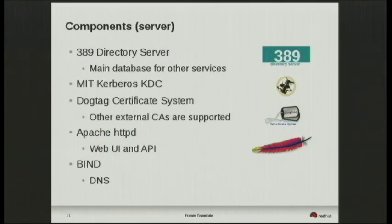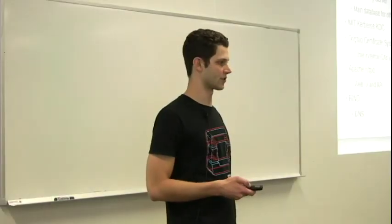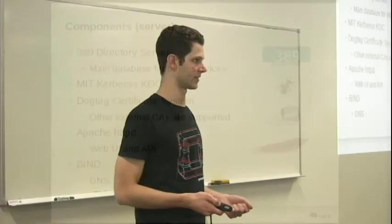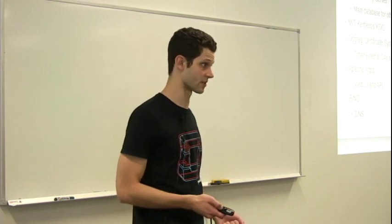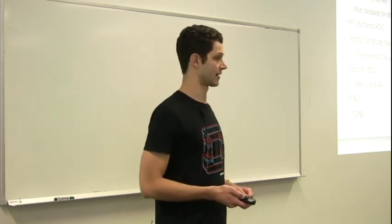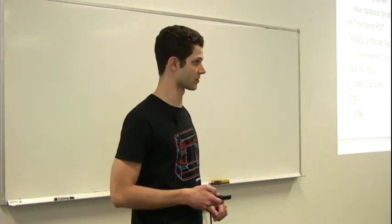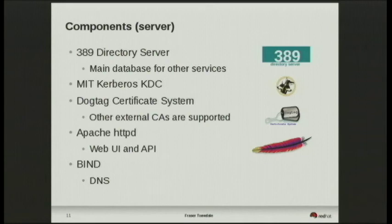The main components of FreeIPA are the 389 Directory Server, which is the main database that FreeIPA and related services use. The MIT Kerberos key distribution center for Kerberos authentication. The Dogtag certificate system manages certificates for hosts and services enrolled in a FreeIPA domain — and in the future, user certificates for client authentication. The Apache HTTP daemon serves up the web UI, and Bind provides the DNS capabilities.